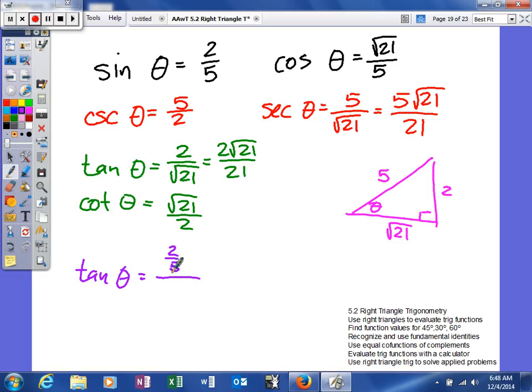So, 2/5 divided by the square root of 21 over 5. I can do one of two things. I can multiply by the reciprocal. I can multiply the top and the bottom by 5. And, we'll get 2 over the square root of 21, which we'll rationalize to the same thing we got just a second ago.